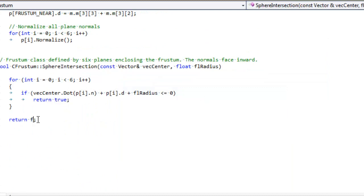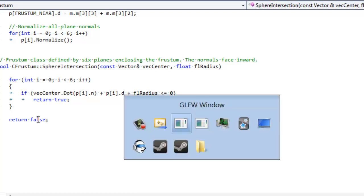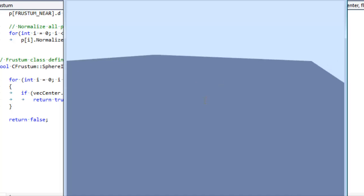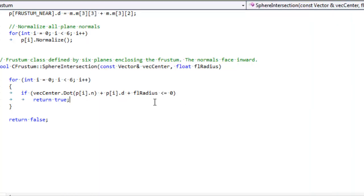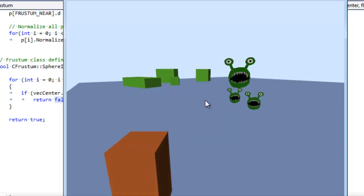So what I'm just going to do is I'm going to reverse this test. I'm going to return true if it's outside and false if it's inside. We're going to reverse that test and you can see now I'm rendering everything that's outside the view frustum, which means I'm not rendering anything at all. So let's put that back. That was just a quick test to see if it worked and it does.